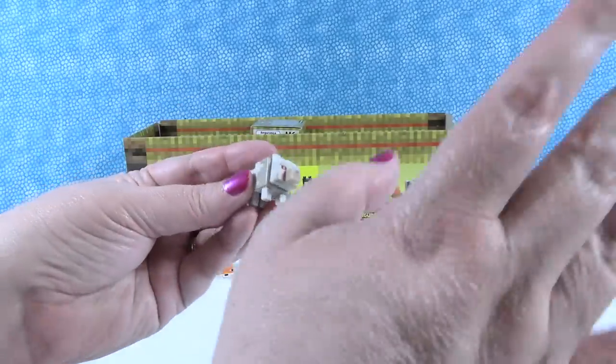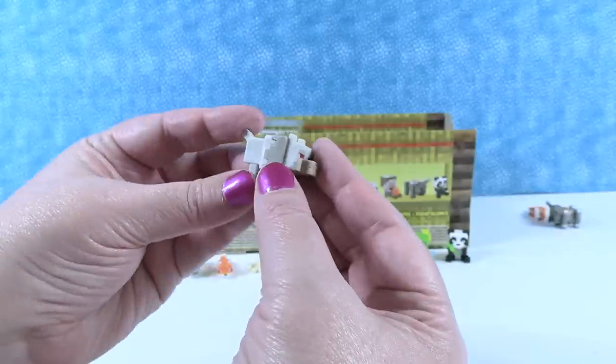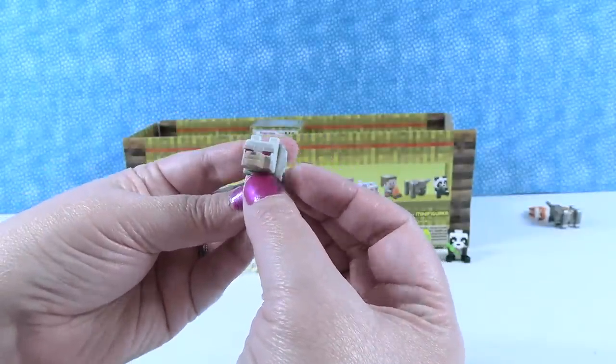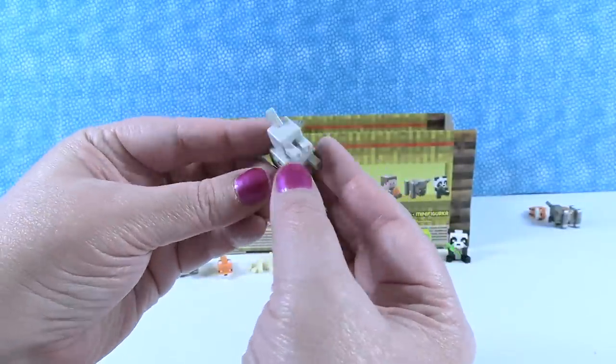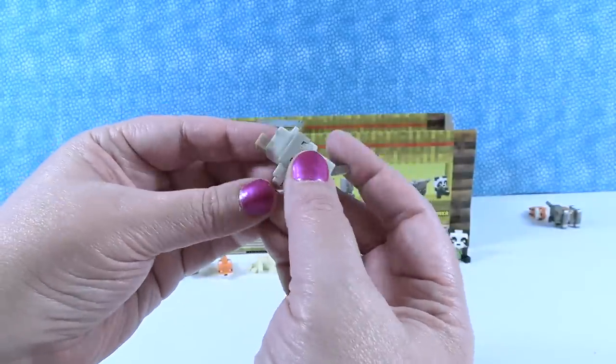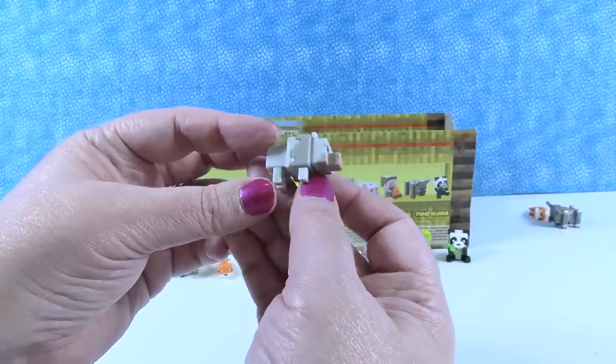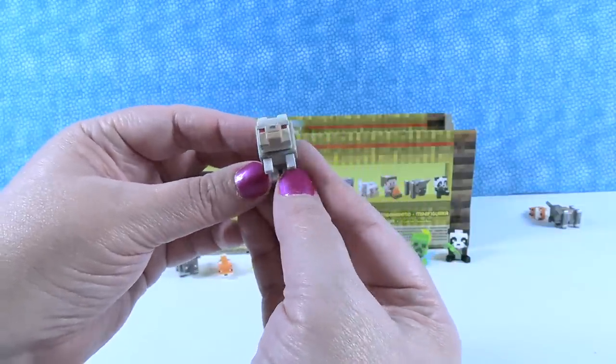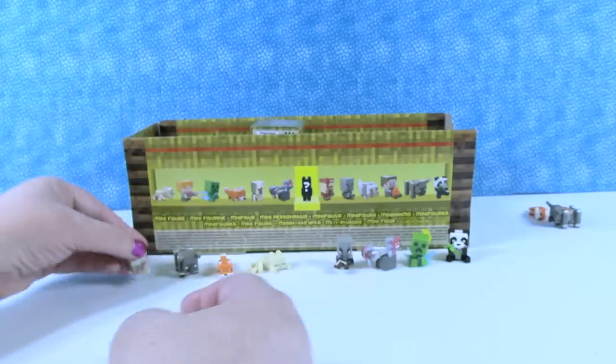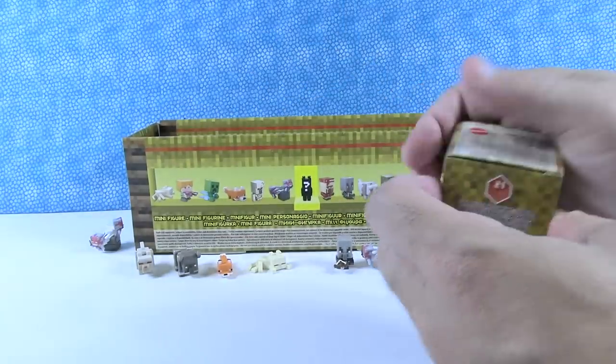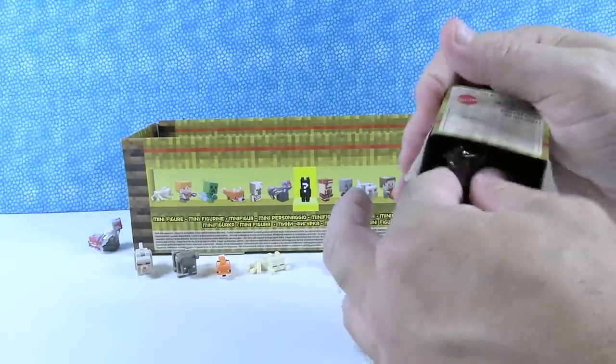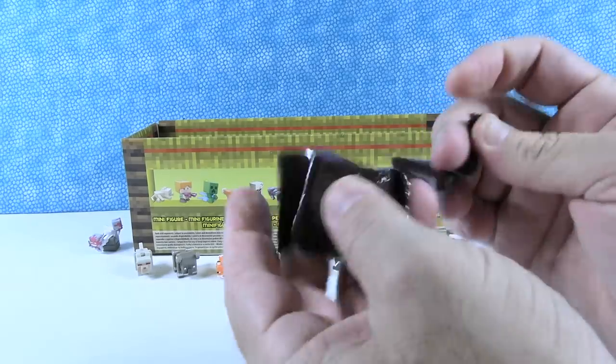All right. Oh, I have a wolf. Wolf. A wolf with red glowing eyes. Yep. Spooky wolf. I like the wolf. The animals have always been some of my favorite Minecraft minifigures. Okay. This is the last one on the top row. So, we have eight different figures. Right now.